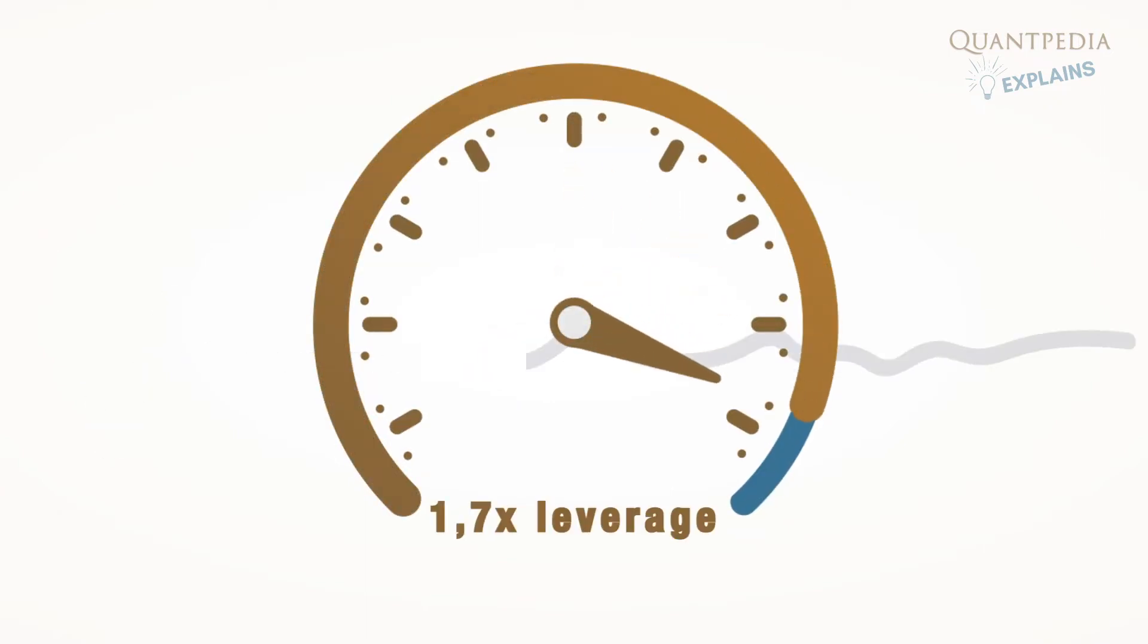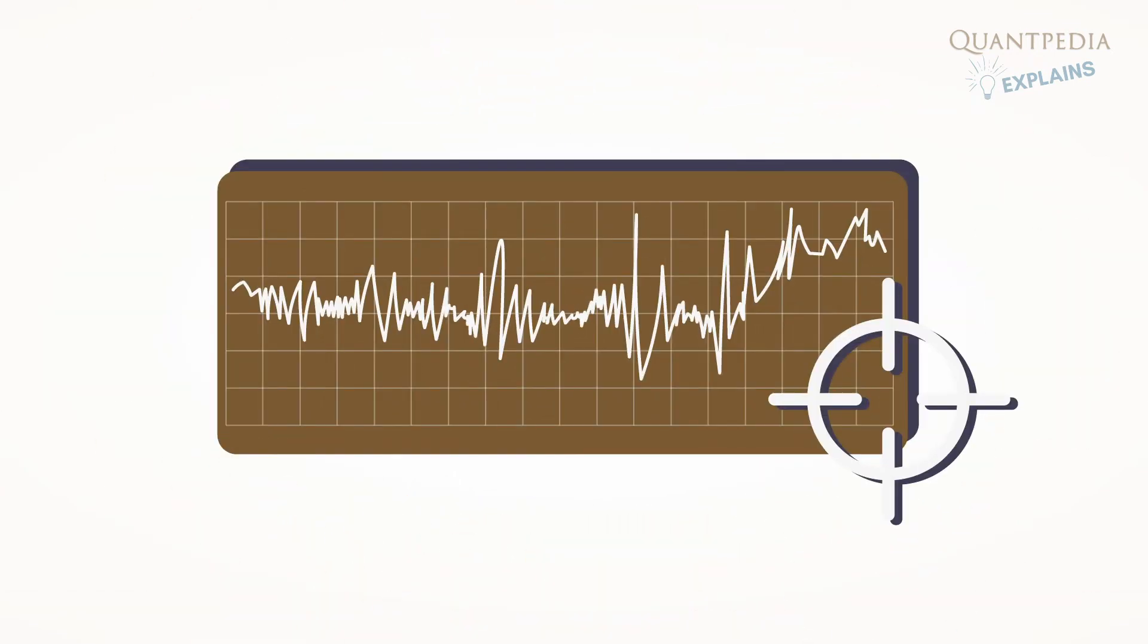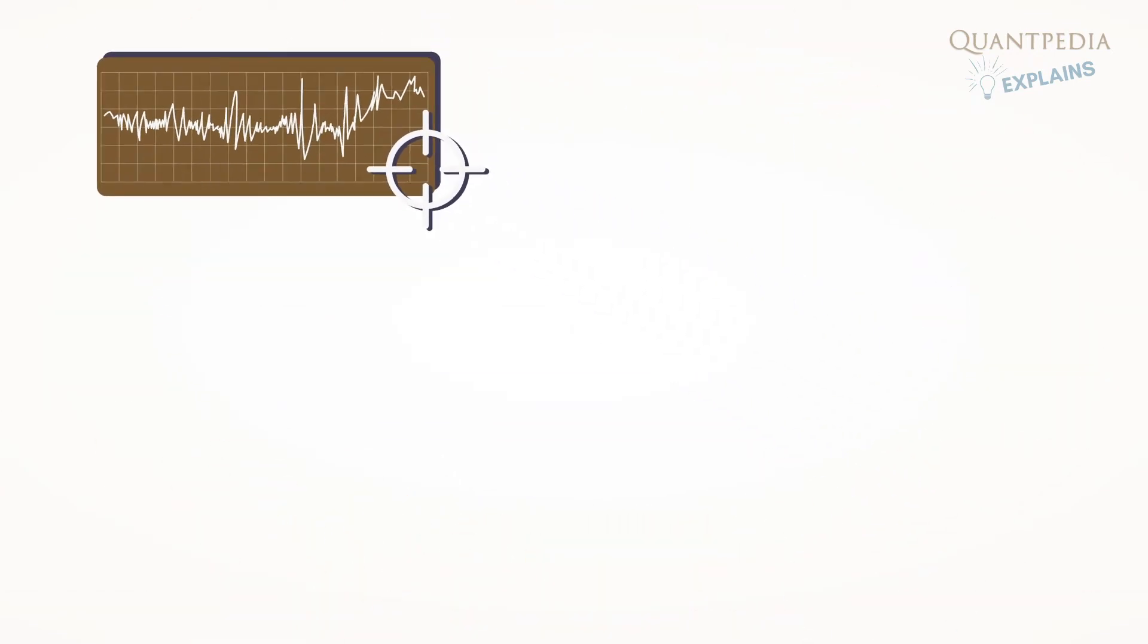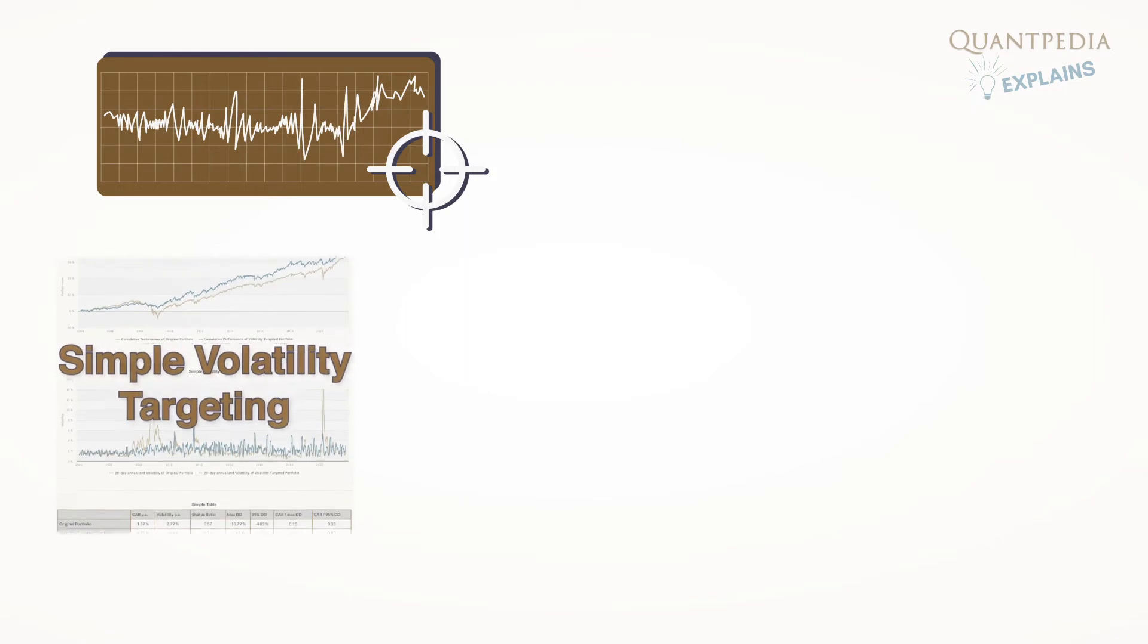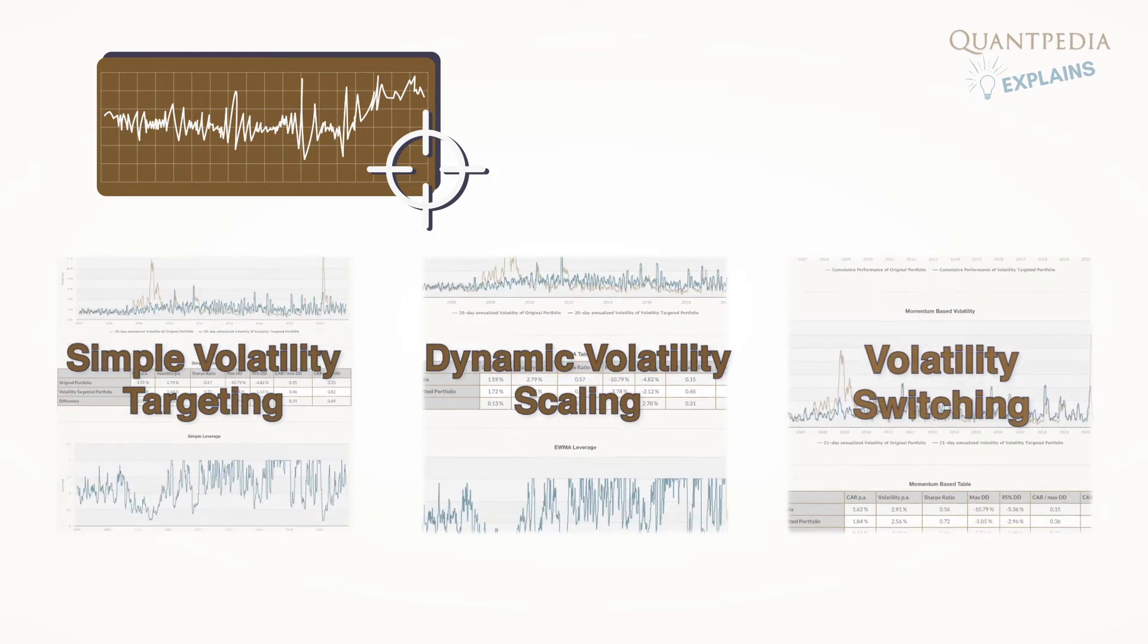The report presents three examples of volatility targeting methods: simple volatility targeting, dynamic volatility scaling, and volatility switching.